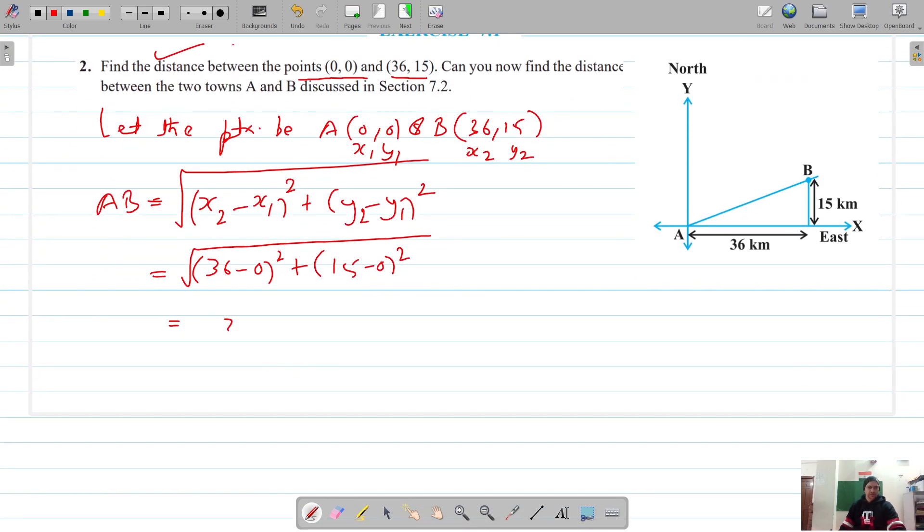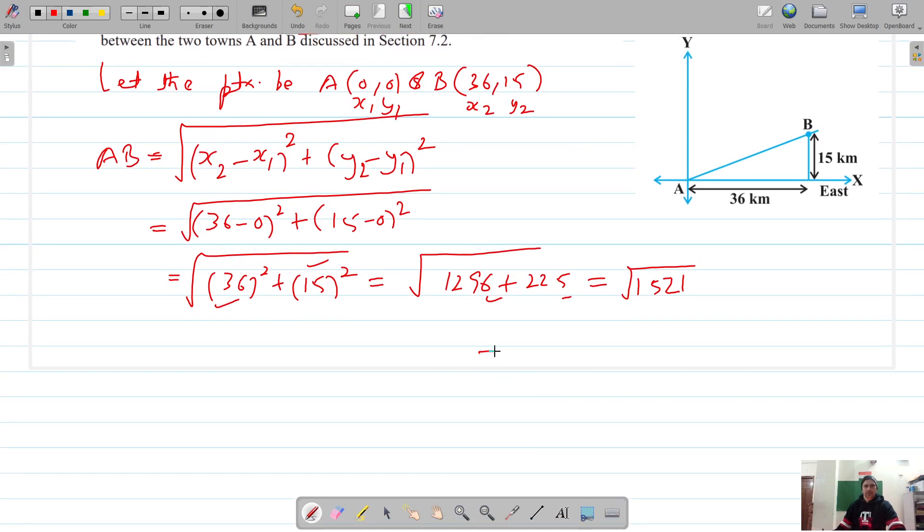So this is now square root of 36² plus 15². The square of 36 is 1296 and 15² is 225. And if we add them, 6 plus 5 is 11, 9 and 2 is 11 plus 1 is 12, and 2 and 2 is 4, so it's 1521.